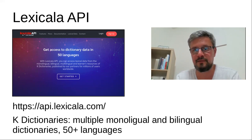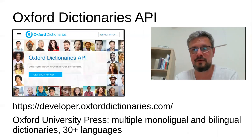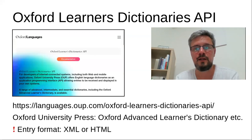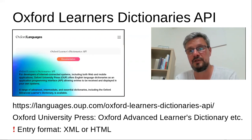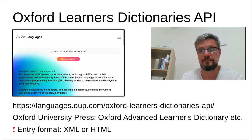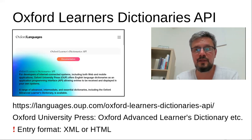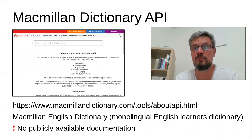All the data in Lexicala flows in JSON, it's very well documented, and there's lots of monolingual and bilingual content in many languages. Oxford Dictionaries also has a very nice API for some of their monolingual and bilingual dictionaries — everything is in JSON and you can sign up for a free account. Interestingly, Oxford University Press has two dictionary APIs. They have another one for their learner's dictionaries, and this one is quite different — the entries it gives you are either in XML or HTML but not in JSON, which is unusual. Macmillan is another major player and also has a dictionary API.